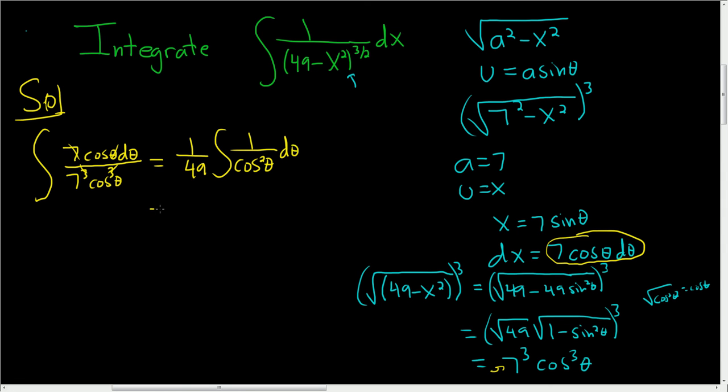1 over cosine is secant. So this is 1 over 49. And then we have secant squared theta d theta. So to integrate secant squared, we just ask ourselves, what is a function whose derivative is secant squared?